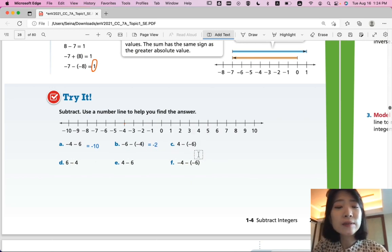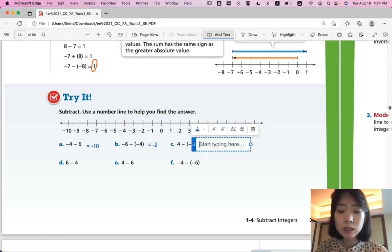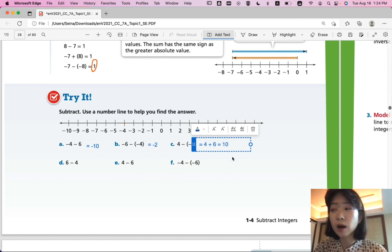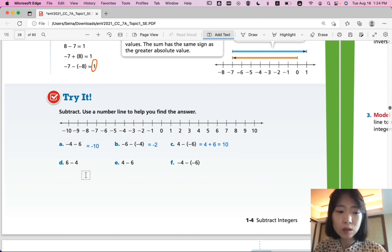Part C. 4 minus negative 6. In the same way, you change the negative, the minus and the negative, into one addition. And then your 6 becomes positive. So, this is equal to 4 plus 6. That's equal to positive 10.